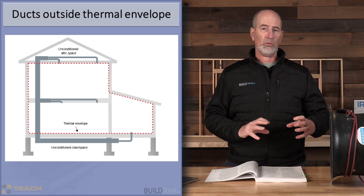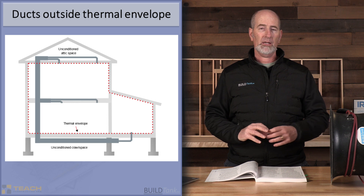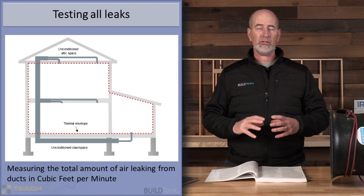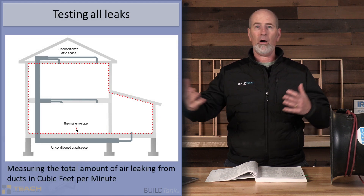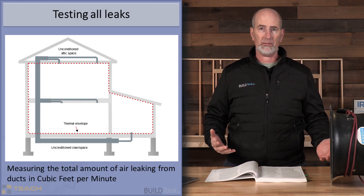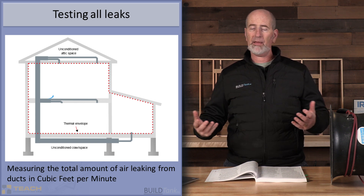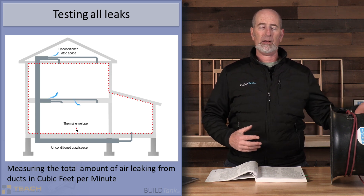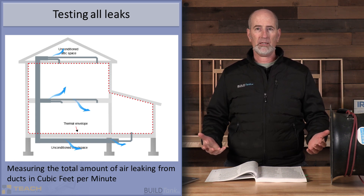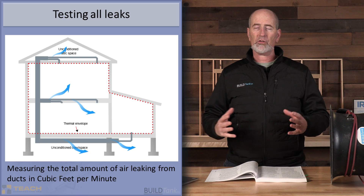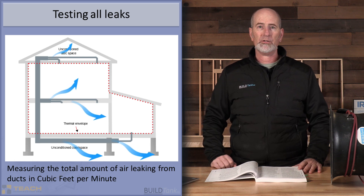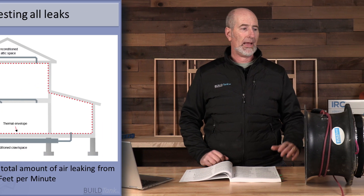What is total duct leakage? It's duct leakage that is happening all over the system — leaking inside the house, leaking outside the house. Wherever it's leaking, we're just trying to quantify how much air is actually leaking out of the duct that's connected to your furnace and air conditioning system.